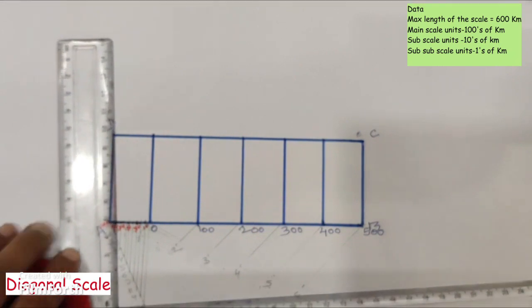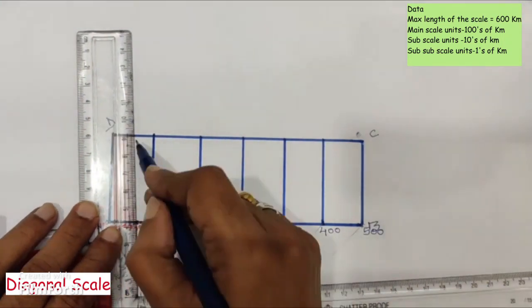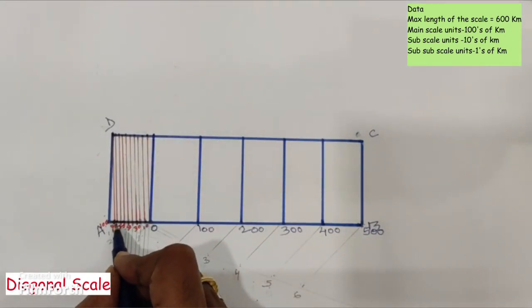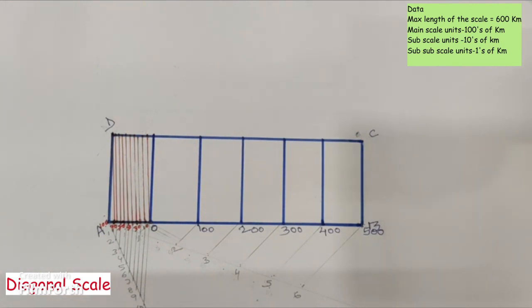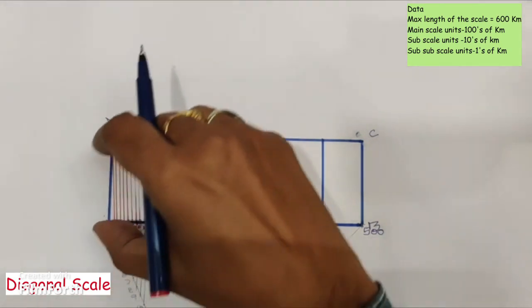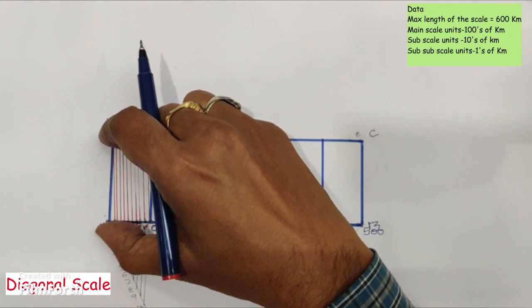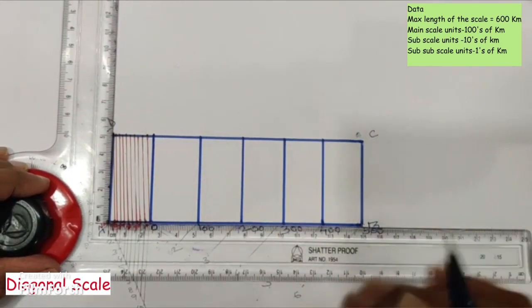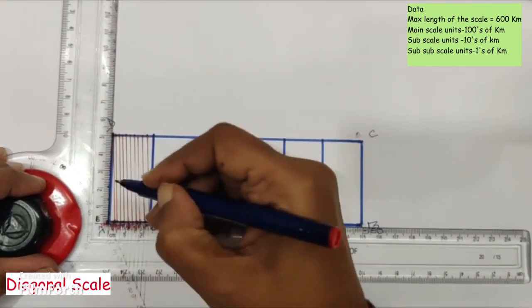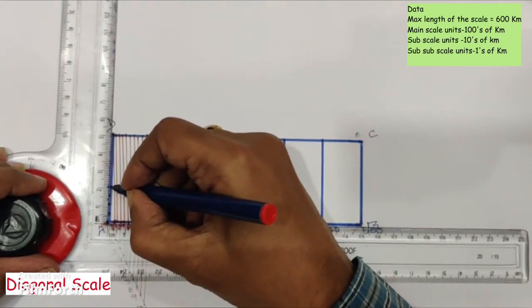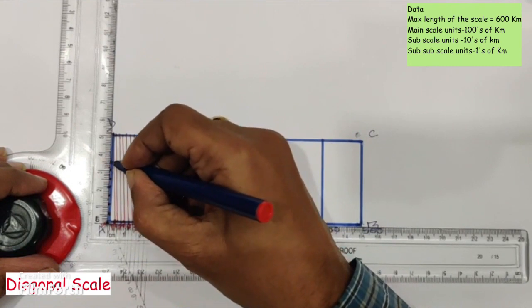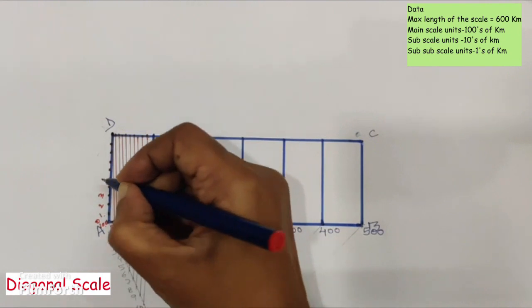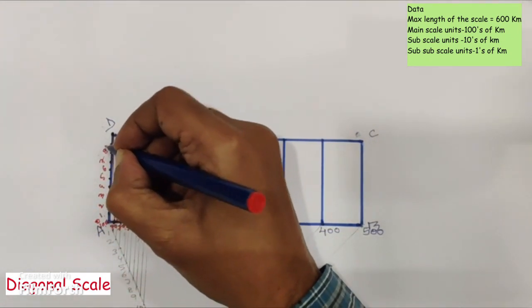Each subscale division represents 10 kilometers. The sub-subscale divisions are in terms of ones of kilometers, so the AD length is to be divided into 10 equal parts, each representing one kilometer. AD is 50 mm, so divide AD into 10 equal parts numbered 0 through 10, each part representing one kilometer.